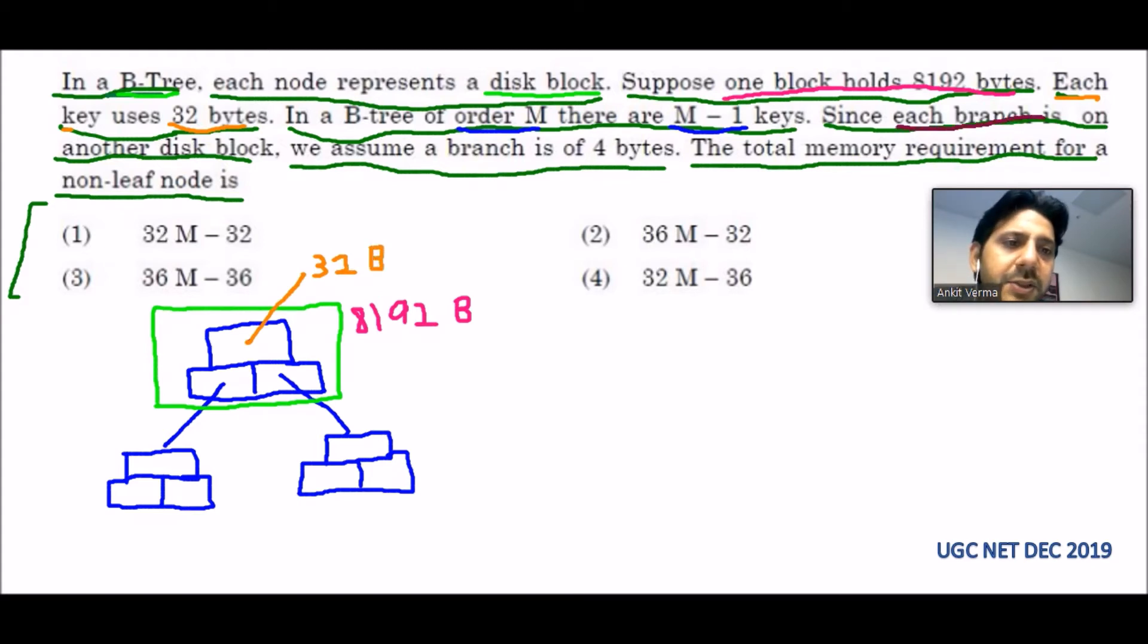Since each branch is on another disk block, this branch is connecting one disk block with the other disk block. We assume that branch is 4 bytes, so this branch is 4 bytes.